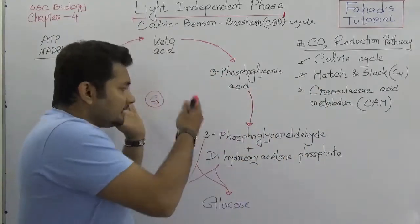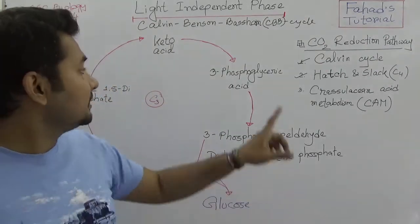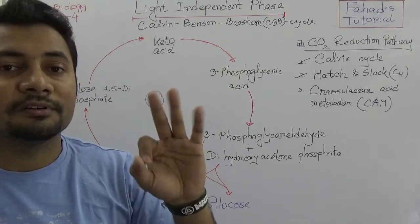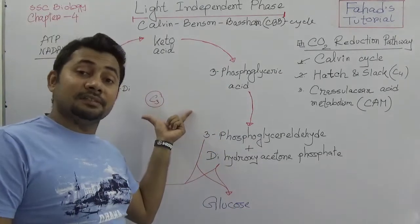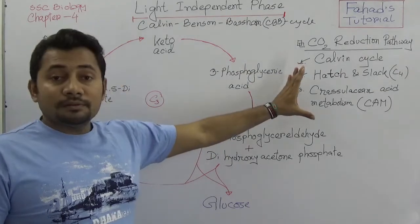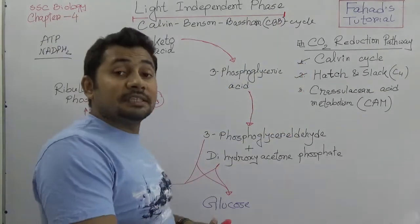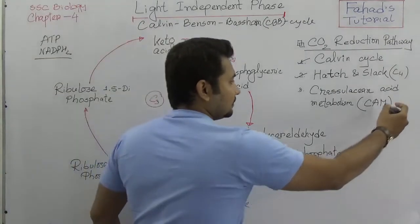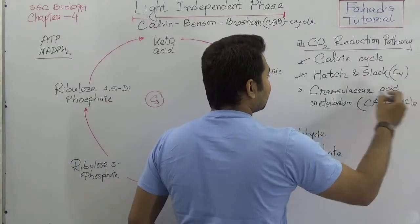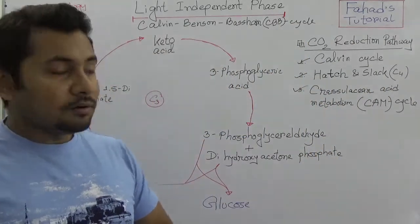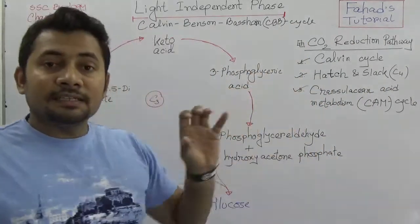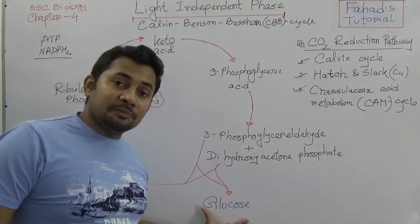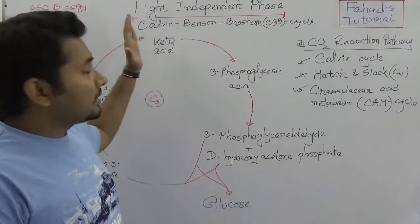In this pathway, the first permanent compound is phosphoglyceric acid, which is a 3-carbon compound, and that is why it's called the C3 cycle. Number 3 is C3 cycle. All three of these cycles explain how glucose is being produced in the photosynthesis process.